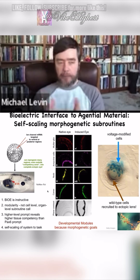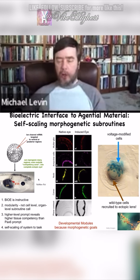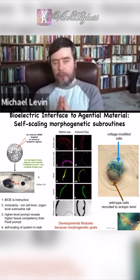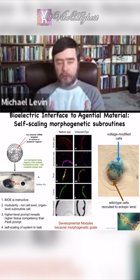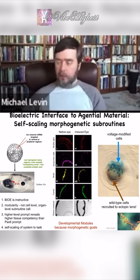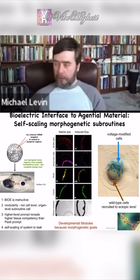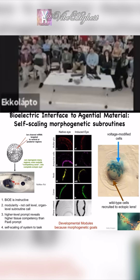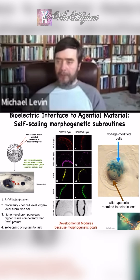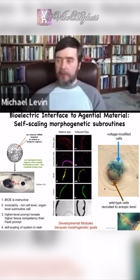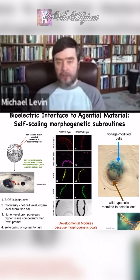The material is competent to receive low-information-content stimuli and then have a very complex downstream response. It also does something cool that other collective intelligences do: if we inject a few cells, they can tell there aren't enough of them to build an eye, so they recruit cells from the environment that we did not inject at all. The material can scale itself to the message received.